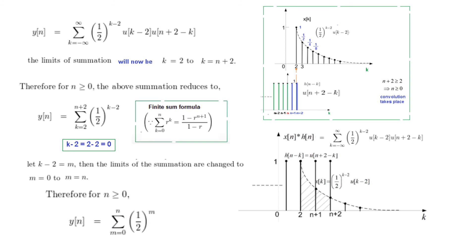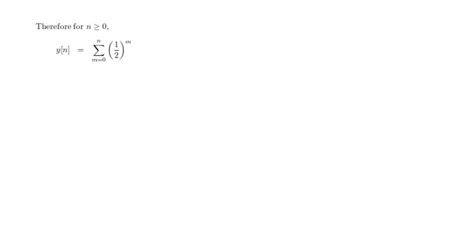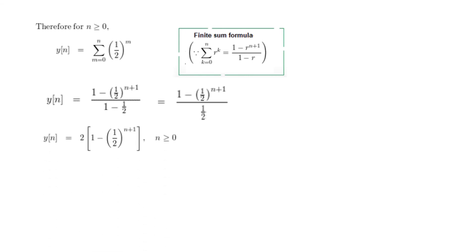Okay so we were here we had this formula finite summation formula and you see they are matching 0 to n limit. So r is half and k is m, so we are placing the values here. So we can say that the summation will be now 1 minus half to the power (n+1) divided by 1 minus r where r is half. And further simplifying this, the denominator will become half. And further simplifying when you just invert 2 will come outside. So this is the formula for the output.